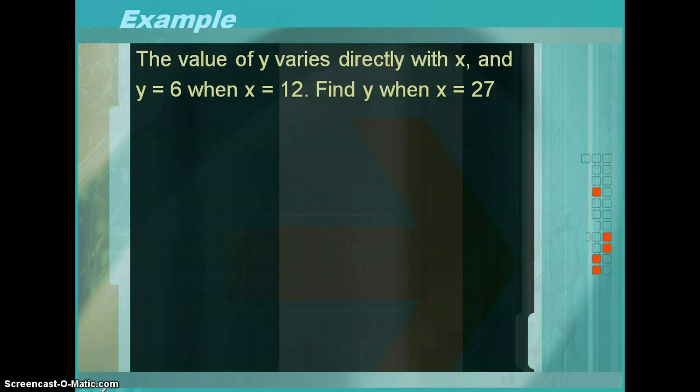This is a multi-step process. The first thing that you've got to remember is that direct variation is defined as y is equal to kx, where, again, k is equal to y divided by x. So, anytime you see the phrase y varies directly with x, that means that y is equal to kx.